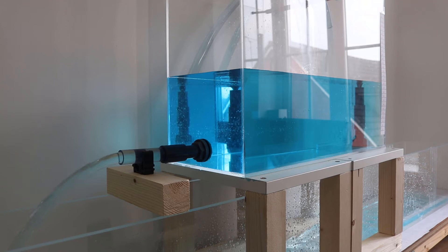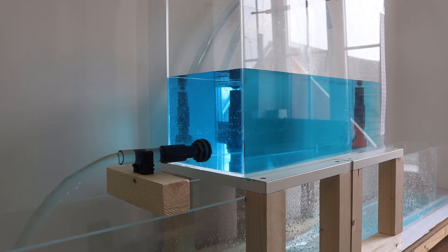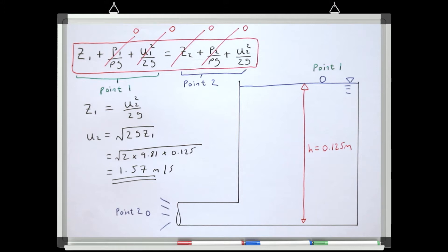In lesson two we looked at how to use Bernoulli's equation to work out the velocity in a pipe fed by a reservoir, based solely on the water level in that reservoir. This was a fairly straightforward method, but in order to solve the equation we had to assume we had no loss of any useful energy anywhere in the system.